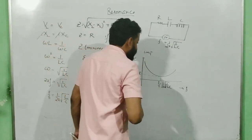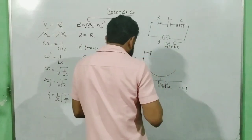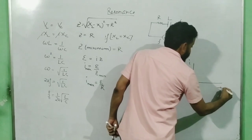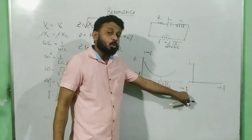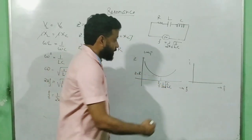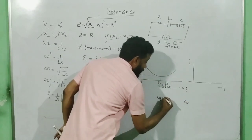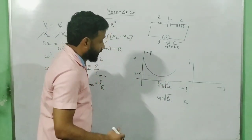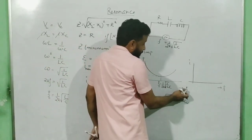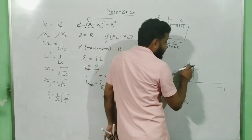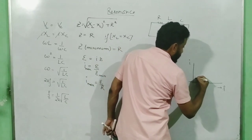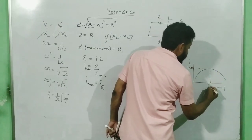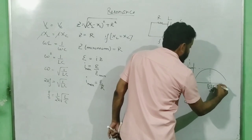Now imagine how the current graph will look. If I plot current versus frequency, since current is inversely related to impedance, the current graph looks opposite — it attains a maximum when frequency equals F naught. If plotting against angular frequency omega, write omega naught equals root over of 1 by LC (without the 2π factor).